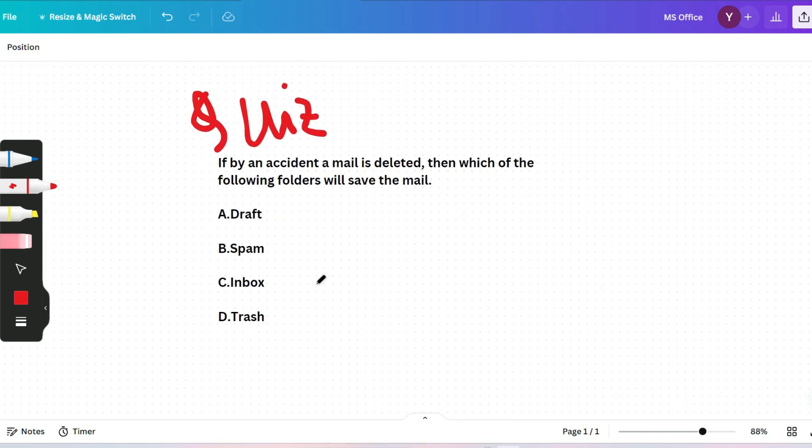The next question is a quick question for you. I will not give the answer to this. If by an accident a mail is deleted, then which of the following folders will save the mail? Draft, spam, inbox, or trash. The name itself I think suggests the answer. If you are very smart, then you can answer the question. Please give the answer in the comment section before anyone else. Let's see who can give the answer first.